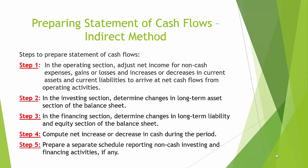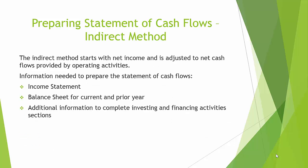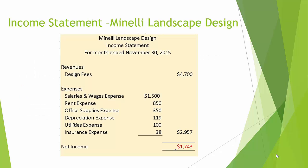Step 4: Compute net increase or decrease in cash during the period. Step 5: Prepare a separate schedule reporting non-cash investing and financing activities, if any. Step 6: The indirect method starts with net income and is adjusted to net cash flow provided by operating activities. Information needed to prepare the statement of cash flows includes the income statement, balance sheet for current and prior year, and additional information to complete the investing and financing activities section.